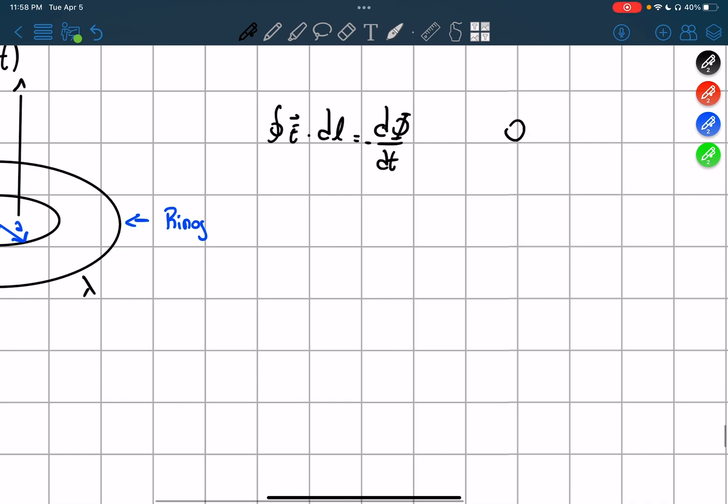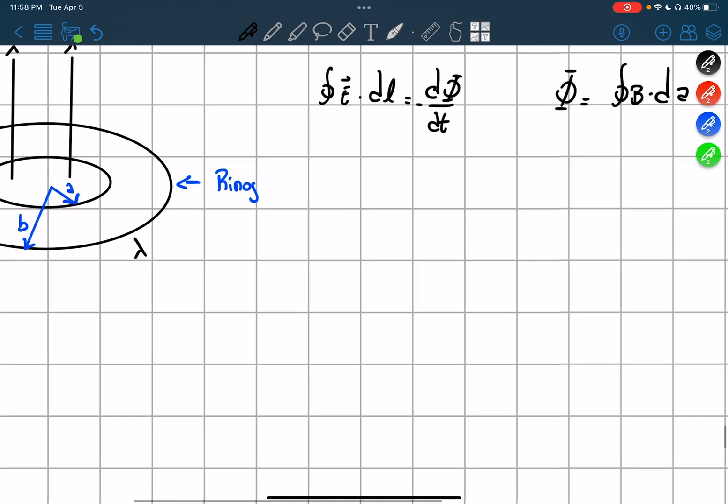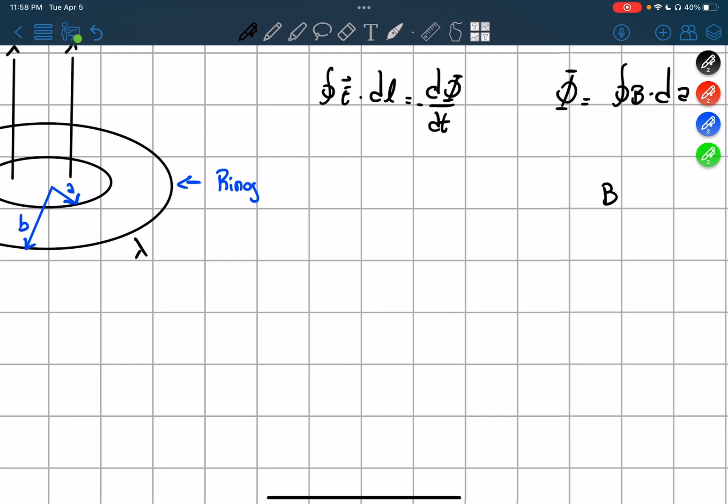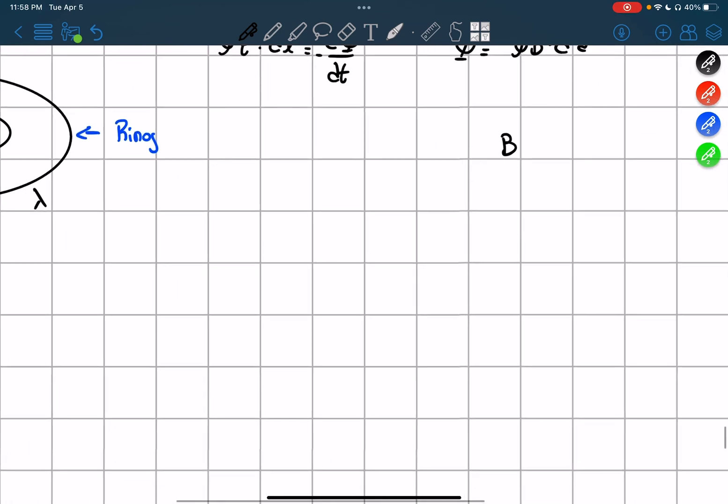And our flux is equal to the integral of B over dA, which in this case is equal to B times, and we're talking about the inside circle, because we're talking about the area where the flux is. It's going to be pi A squared.